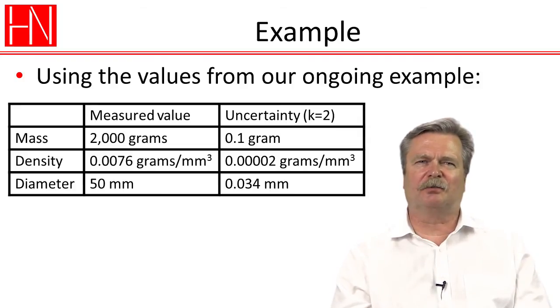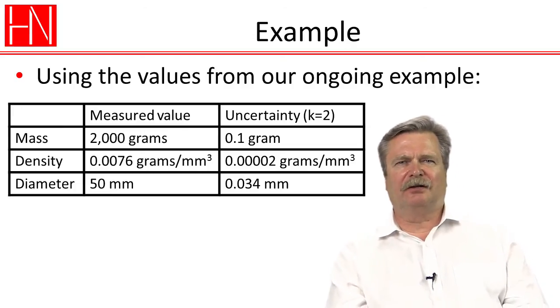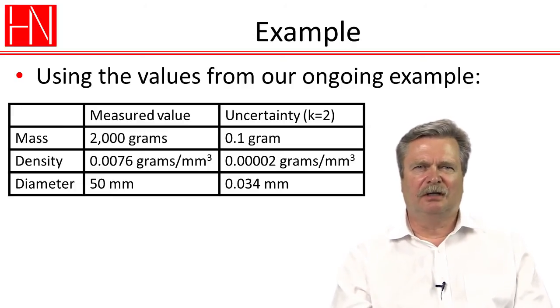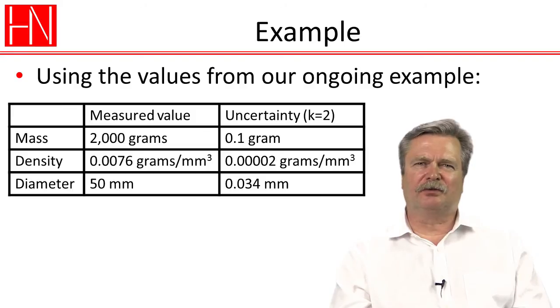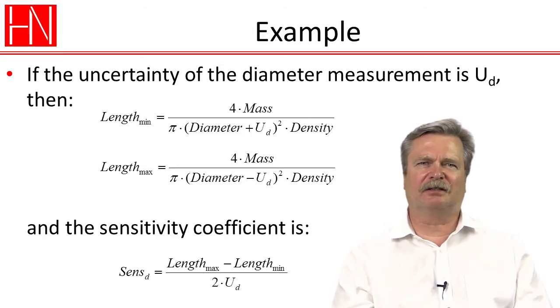And so now we'll talk about how we then combine them together to come up with the uncertainty of determining the length based on these three measurements. And in principle, what we're going to do is take the actual measured values and put into the equation. And then we're going to first add the uncertainty of one of the contributors and then subtract it.